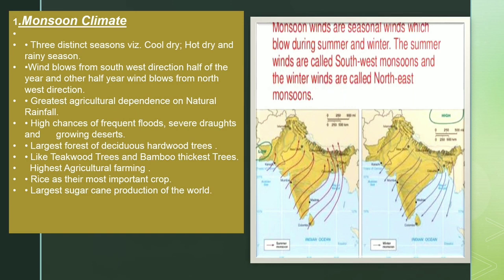There are three distinct seasons: cool dry, hot dry, and rainy seasons. Wind blows from the southwest direction for half of the year, and the other half of the year the wind blows from the northwest direction. There is the greatest agricultural dependence on natural rainfall, because agriculture is very well supported here. There are high chances of frequent floods, severe droughts and growing deserts.